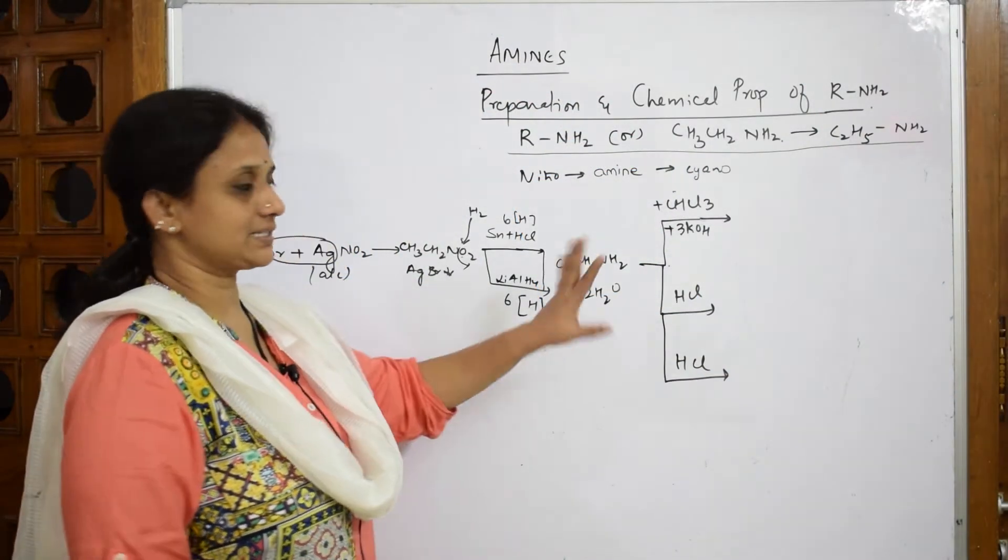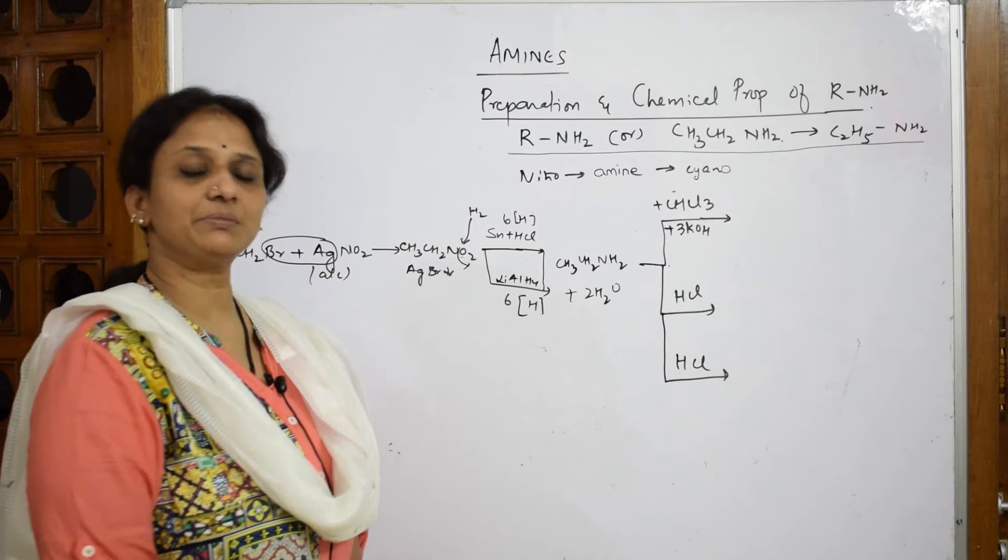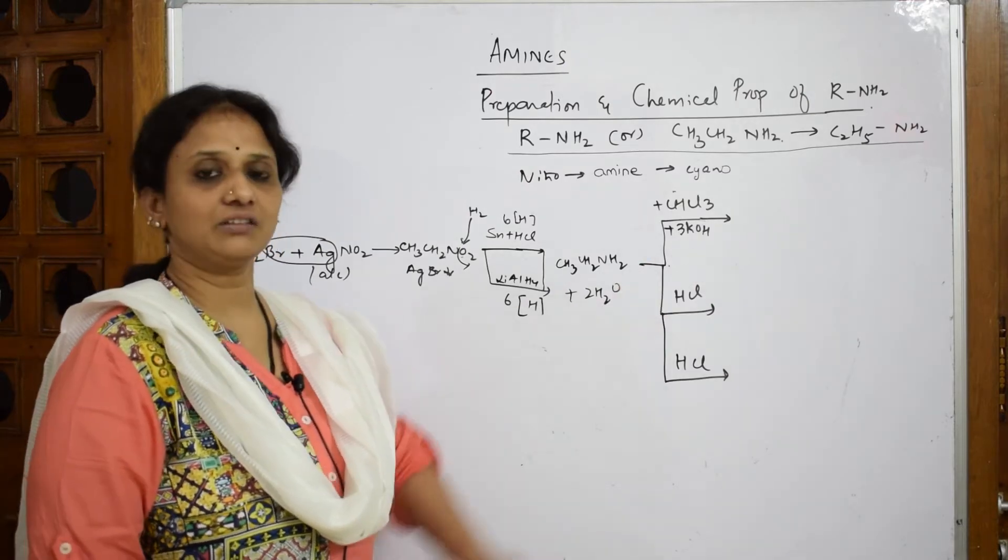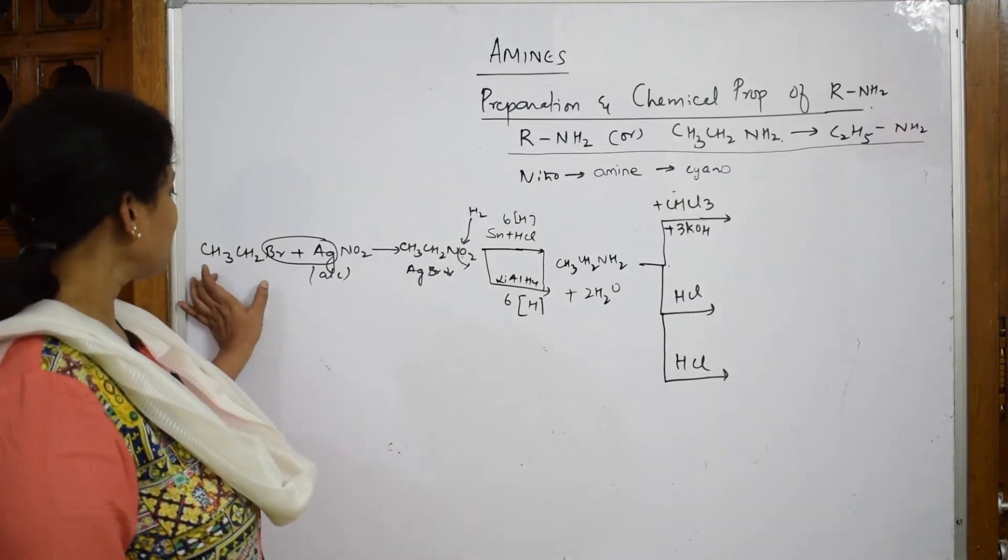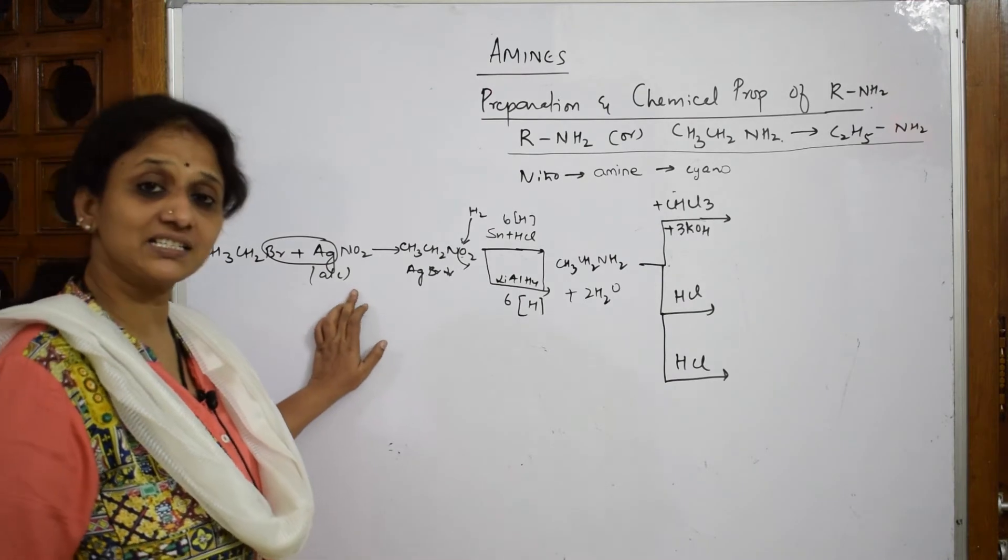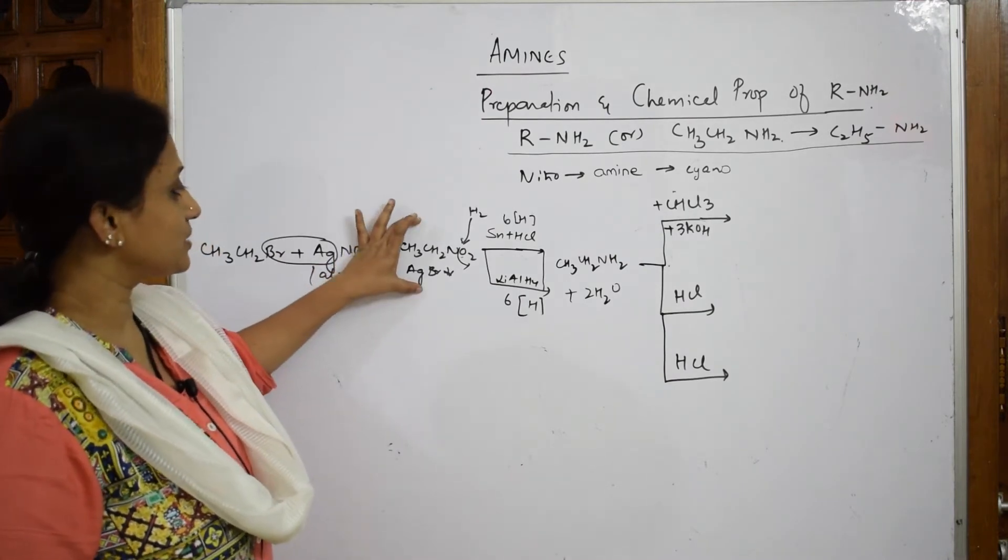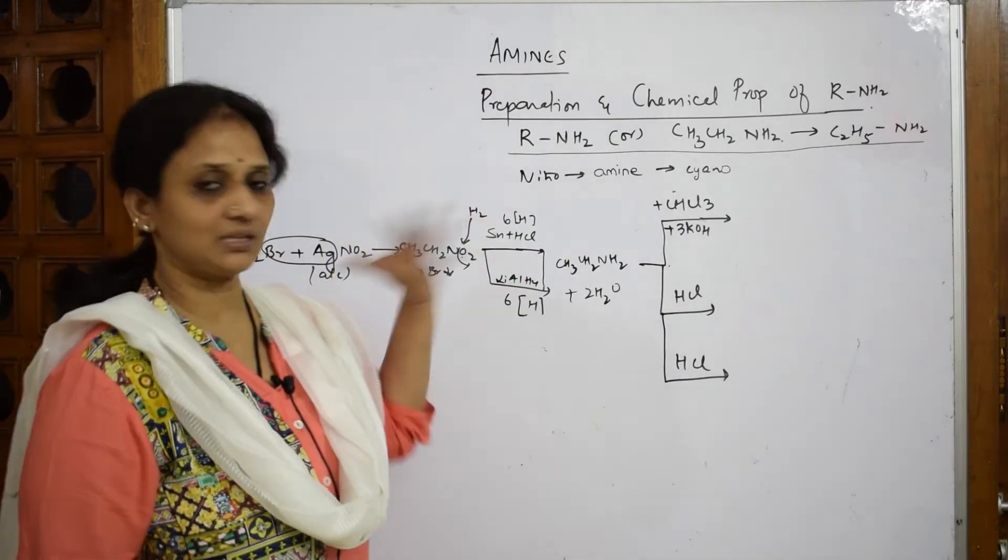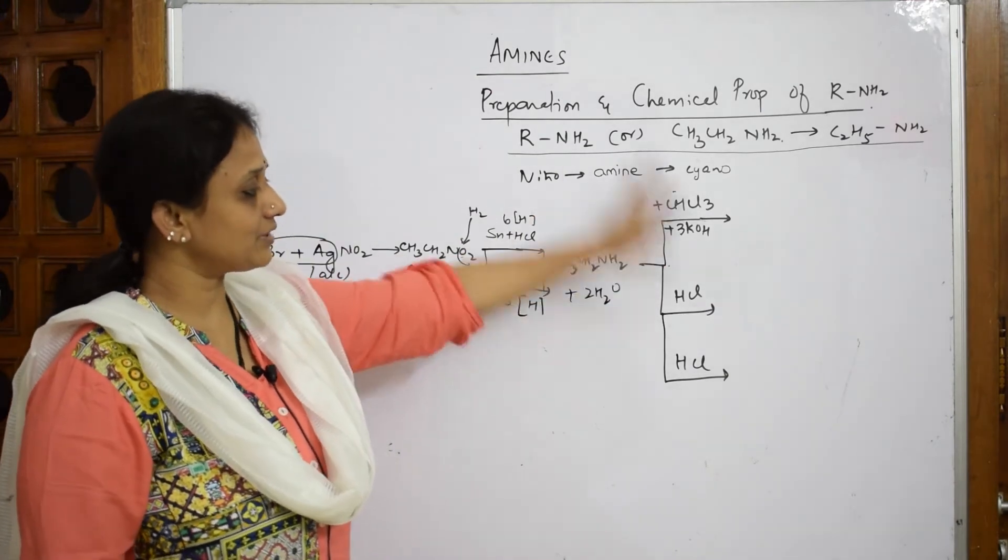Now let us come back and start with the next set. The same thing again, I'm using the same ethylamine and we are seeing three more reactions. Same story: taking alkyl halide, adding silver nitrate, you're getting nitrobenzene. One reduction is giving ethylamine.